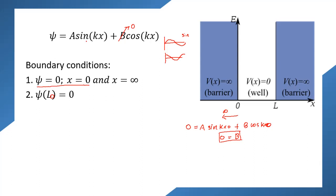Now let us look into our next boundary condition: ψ(L) = 0. We have an infinite barrier at x = L, so there is no possibility for the particle to jump to that barrier. Therefore the wave function inside this region must also be zero at x = L. Our wave function after applying the first boundary condition is ψ = A sin(kx).